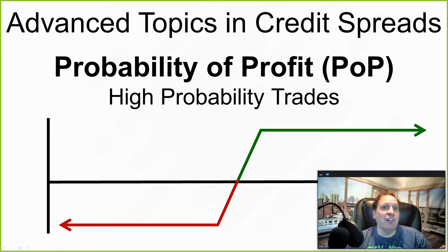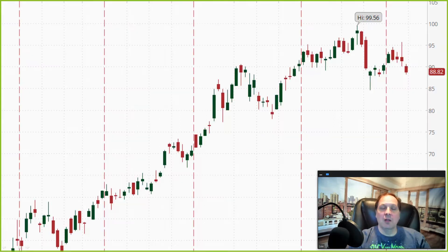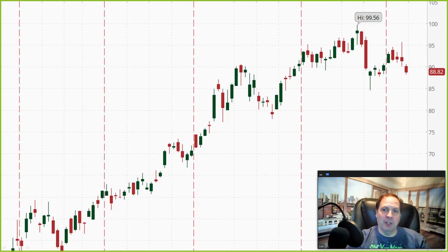If I ask you what's the probability the stock will go up, nobody can really answer that. But if I ask you what's the probability that this coin toss will be heads, it's easy to calculate the answer as 50%. So let's take a look at this chart and see if we can have an example about how to make a high probability trade on a credit spread.